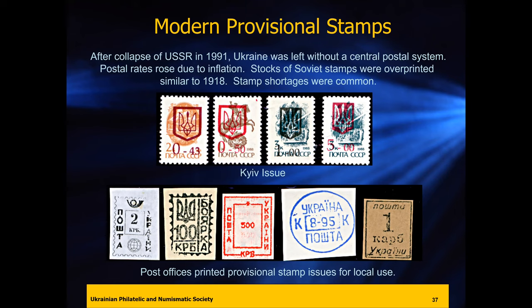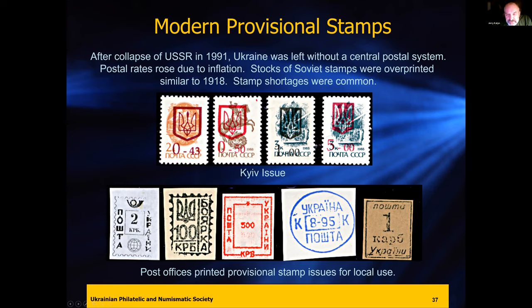When we started collecting these stamps 20 years ago, they were coming out of Ukraine in buckets and everybody in our clubs was excited to start collecting them. Now we look at our collections of fakes. There are a number of books published on the provisionals — the first ones came out in Ukrainian, printed by Ukrainian philatelists, which were excellent publications. Our society actually translated one into English, available for anyone interested in collecting provisionals. It has all the legitimate issues only.